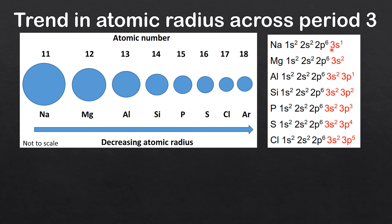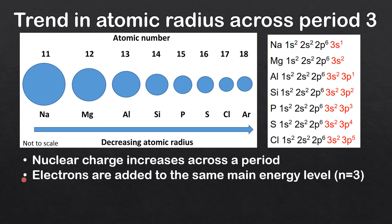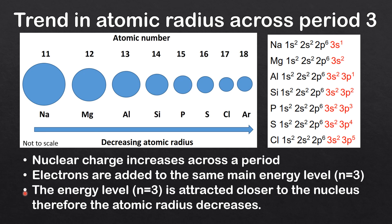Sodium has one electron in the n = 3 energy level, magnesium has two, and so on until chlorine which has seven electrons in the n = 3 energy level. Nuclear charge increases across a period as the atomic number increases by one from left to right, and electrons are added to the same main energy level (n = 3) as seen in the electronic configurations. Because of these two factors, the n = 3 energy level is attracted closer to the nucleus, and therefore the atomic radius decreases.